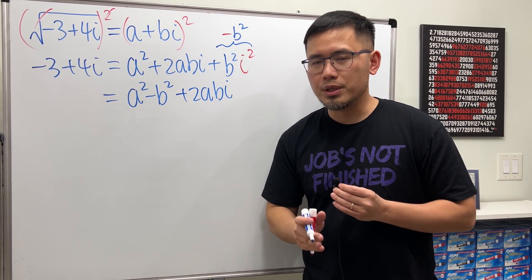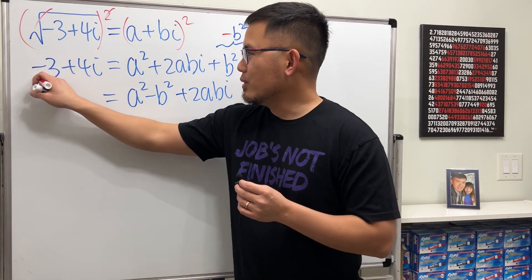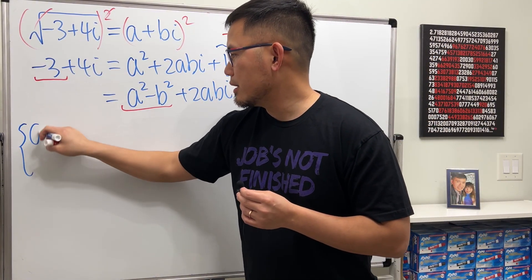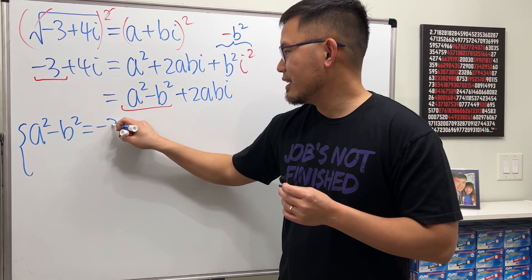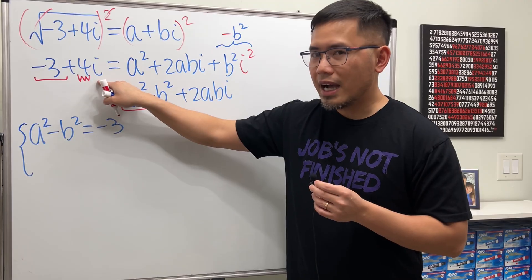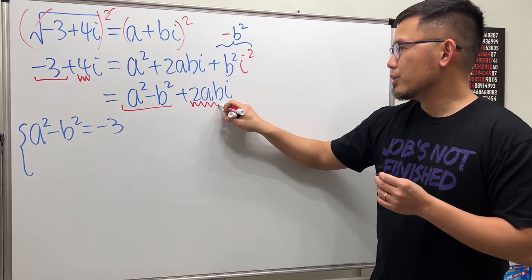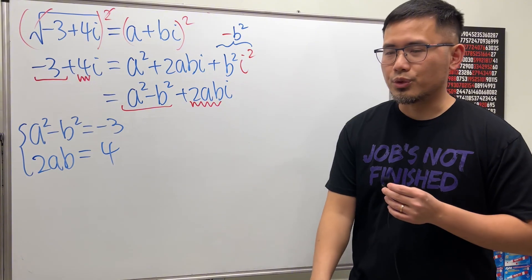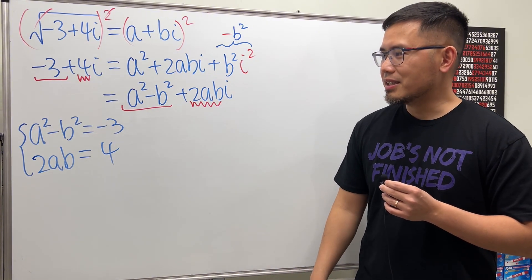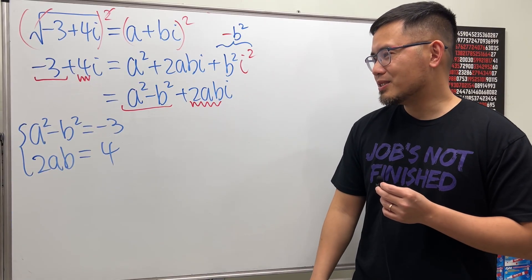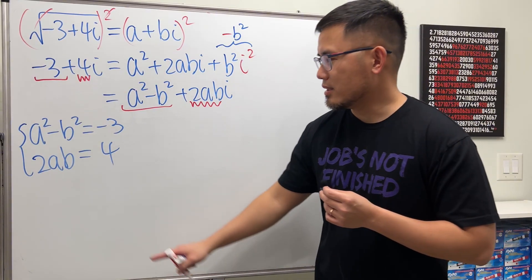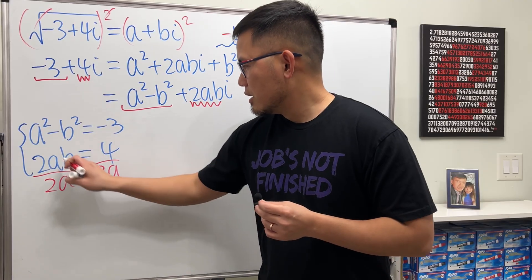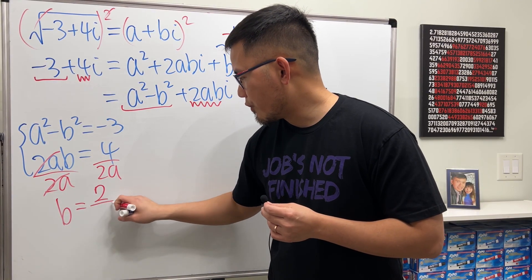Setting real parts equal: a squared minus b squared equals negative 3. Setting imaginary parts equal: 2ab equals 4. Now we solve this nonlinear system by substitution. Starting from 2ab equals 4, divide both sides by 2a to get b equals 2 over a.